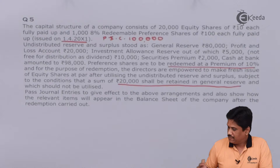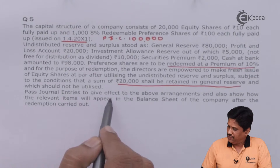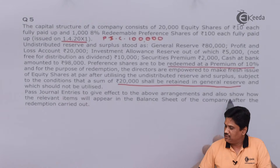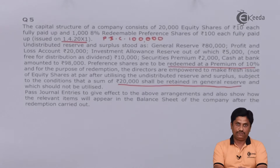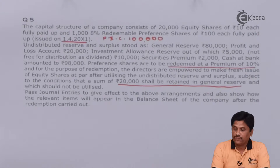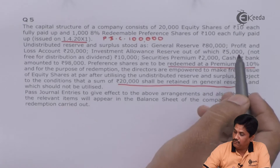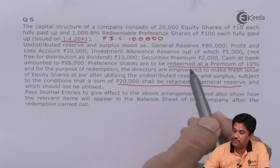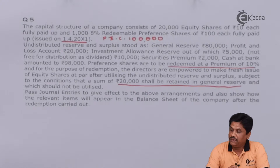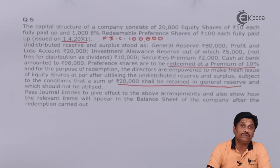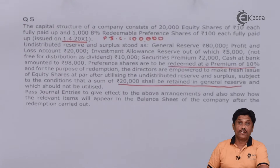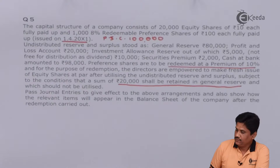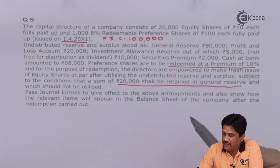Pass general entries to give effect to the above arrangements and also show how the relevant items will appear in the balance sheet after redemption is carried out. This is a very interesting question. The key issue here is the investment allowance reserve: 5,000 is non-divisible, and 5,000 is divisible. Based on the available profit, I will decide my fresh issue.